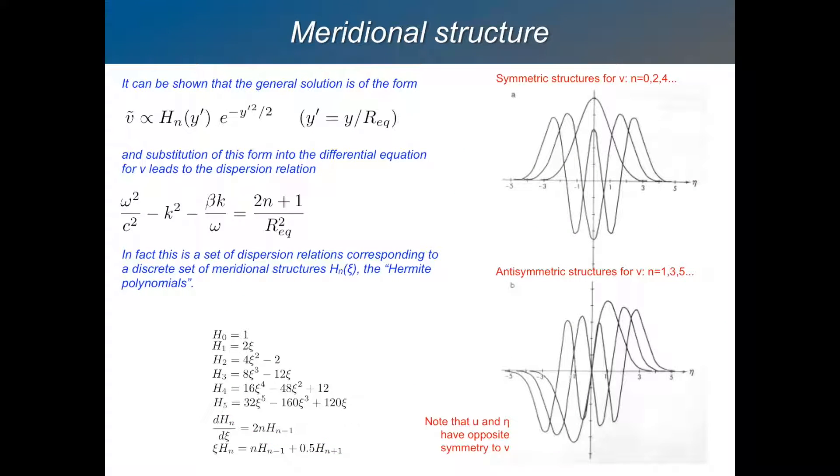What does this meridional structure look like inside those bounds? Well, this is the solution. Here it is. It's v tilde, it's proportional to this thing, Hn of y prime, y prime is a non-dimensional y, y over the equatorial radius. Hn is the Hermite polynomial and e to the minus y squared over 2. This is like what we had for the Kelvin waves before, except now we multiply it by this Hermite polynomial. So the product of these two things is called a parabolic cylinder function and you can see pictures of it sketched here on the right.